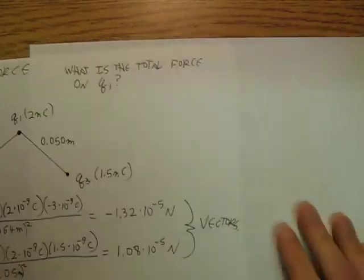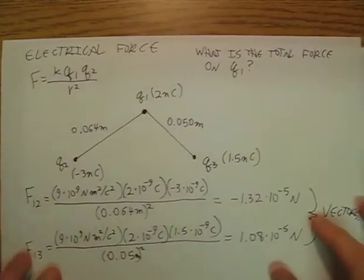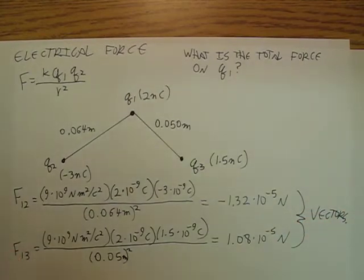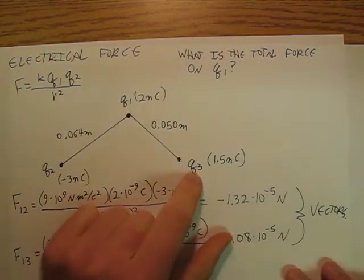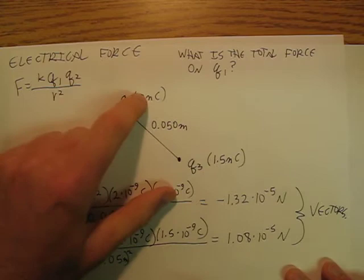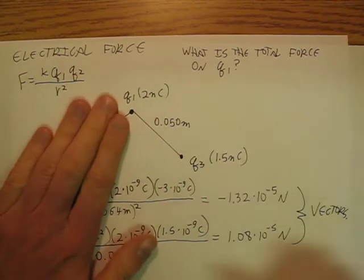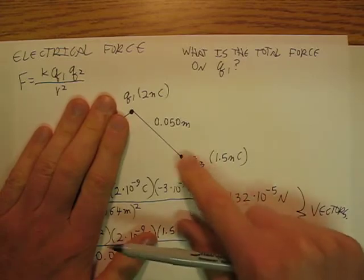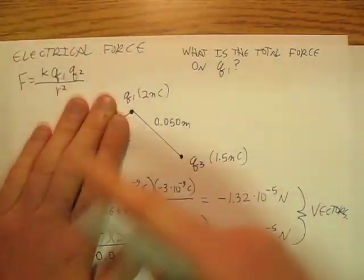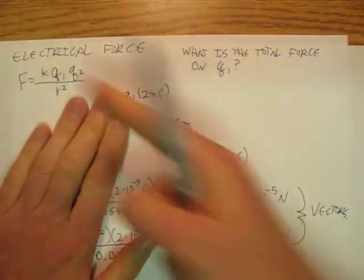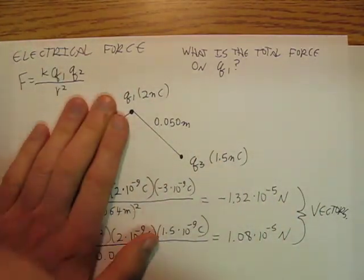And so I've got a vector going this way. Now, tip to tail, Q1 is positive, Q3 is positive. So Q3 is pushing Q1 this way. Q3 is going to push Q1 that way.